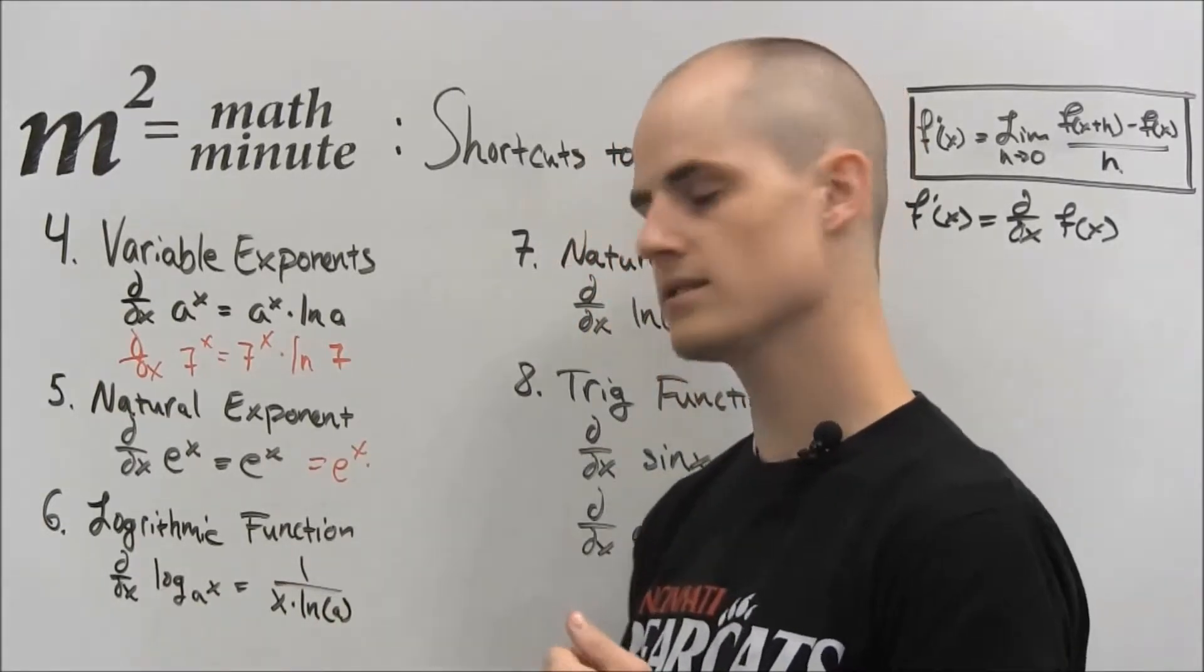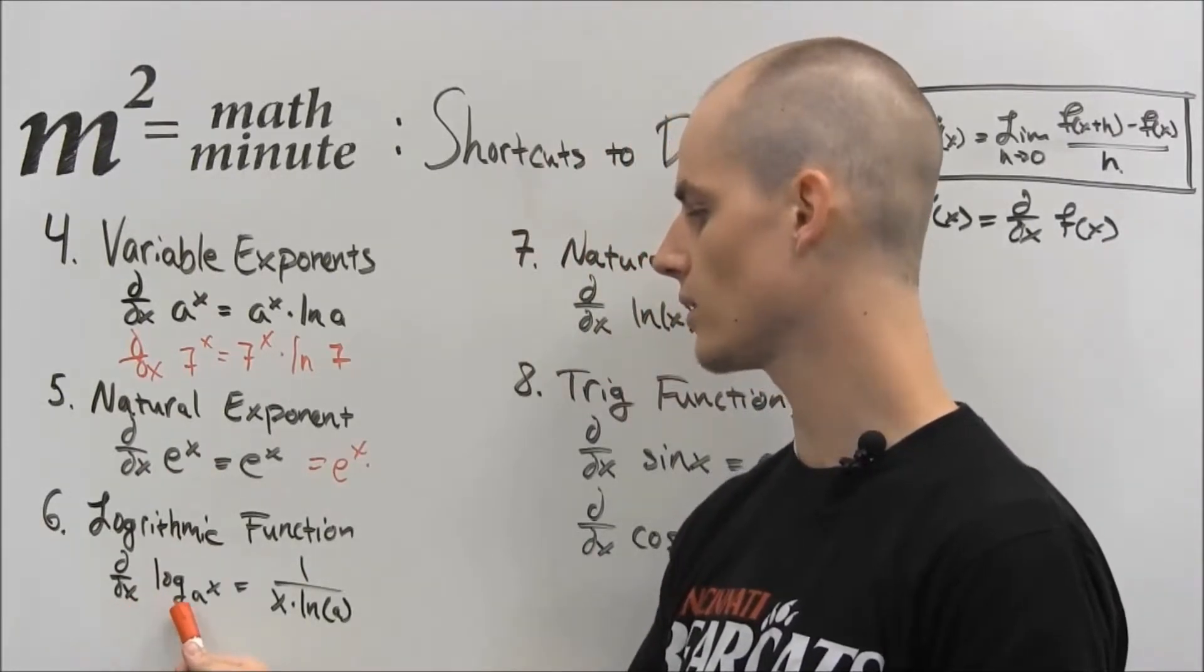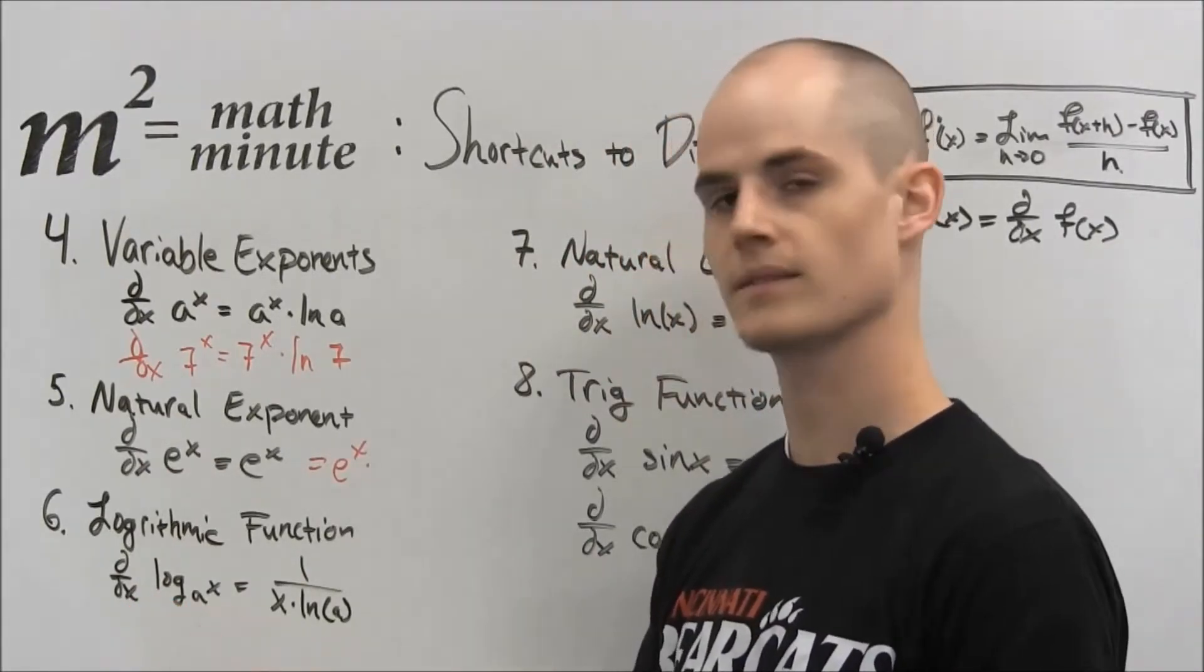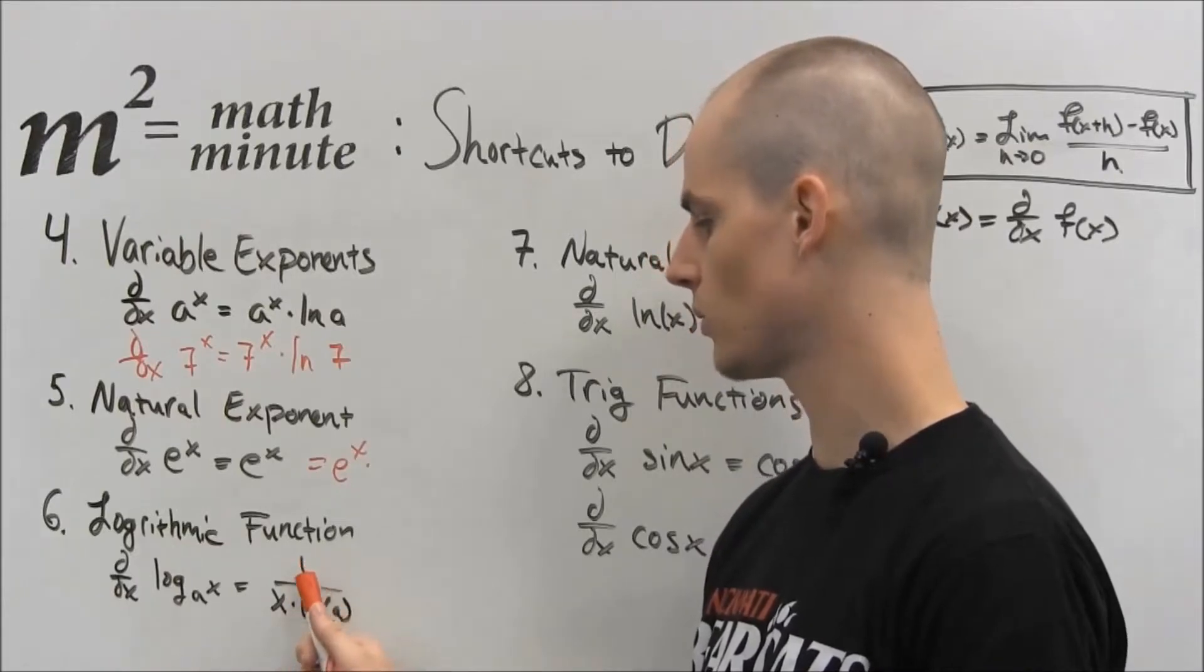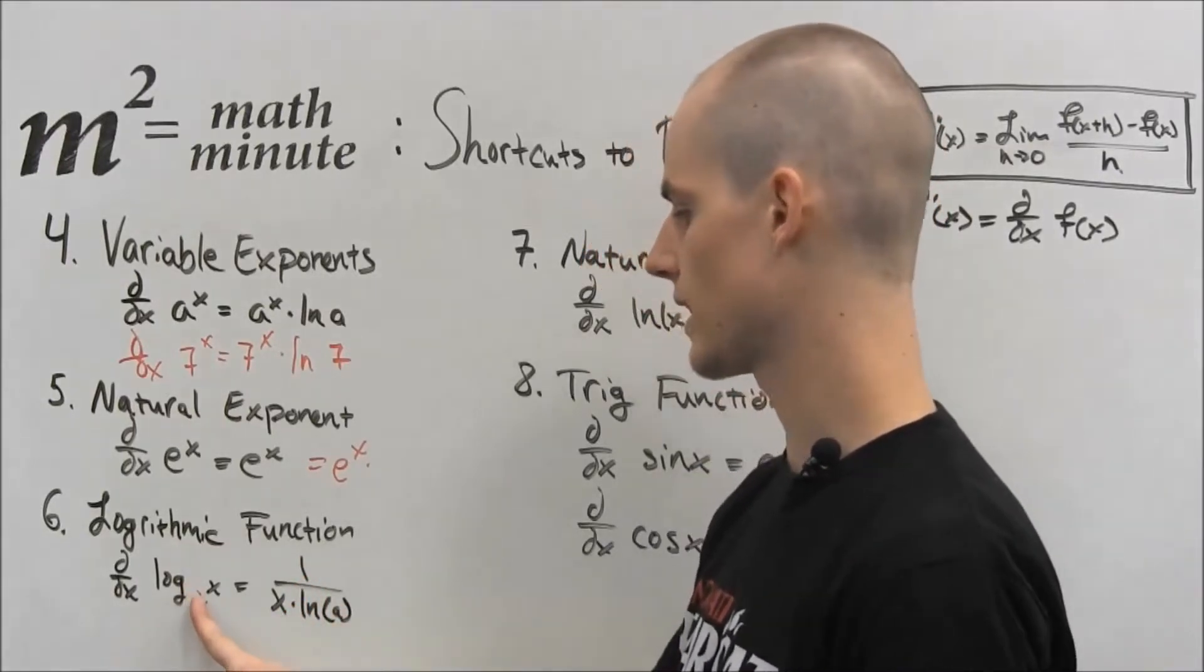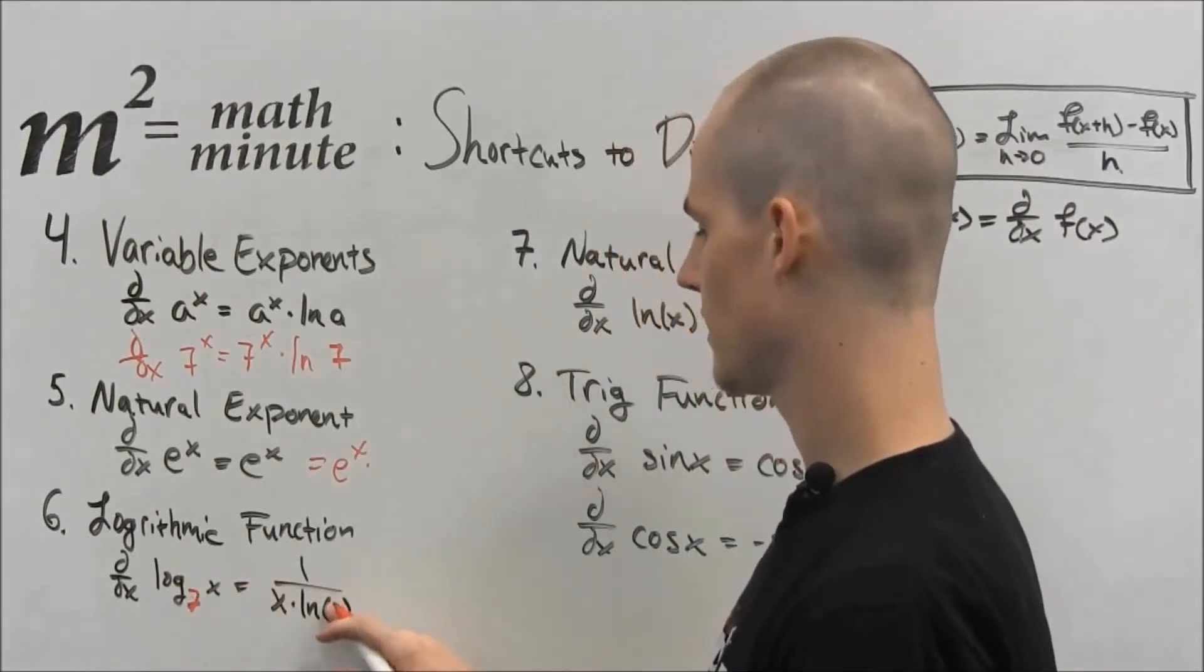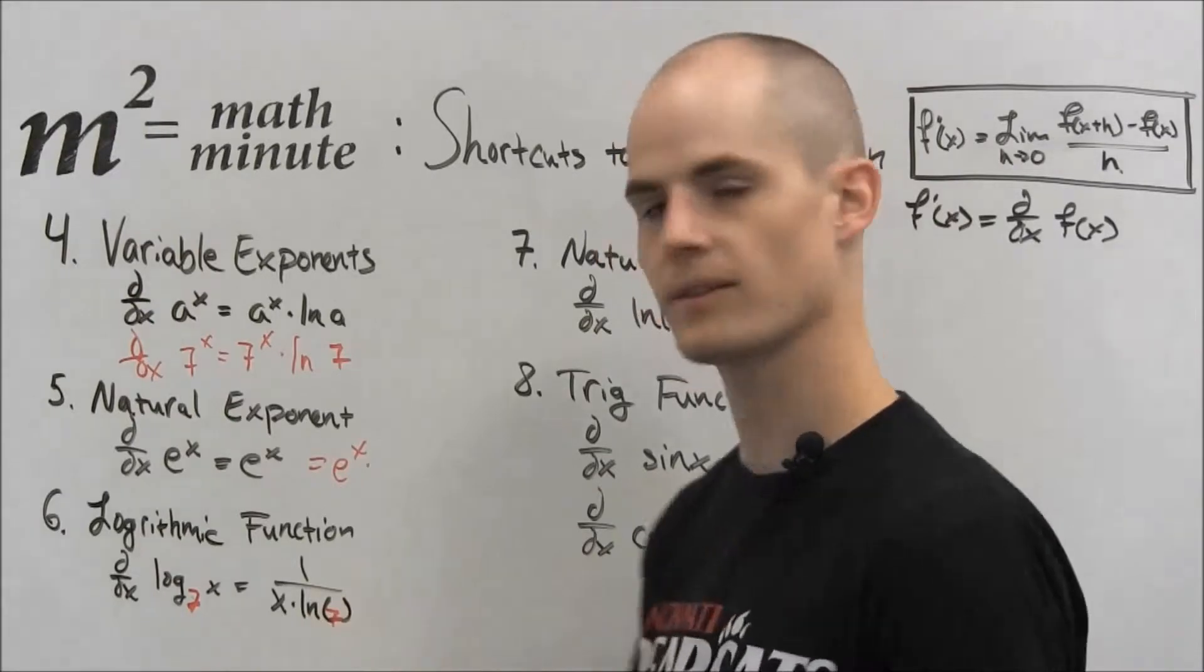Next is logarithmic functions. In this one we have the derivative of log base a x. And what that equals is just one over x times ln a. So if this was for example, I'll use seven again, since it is my favorite number for some reason, and seven goes here. Nothing really changes.